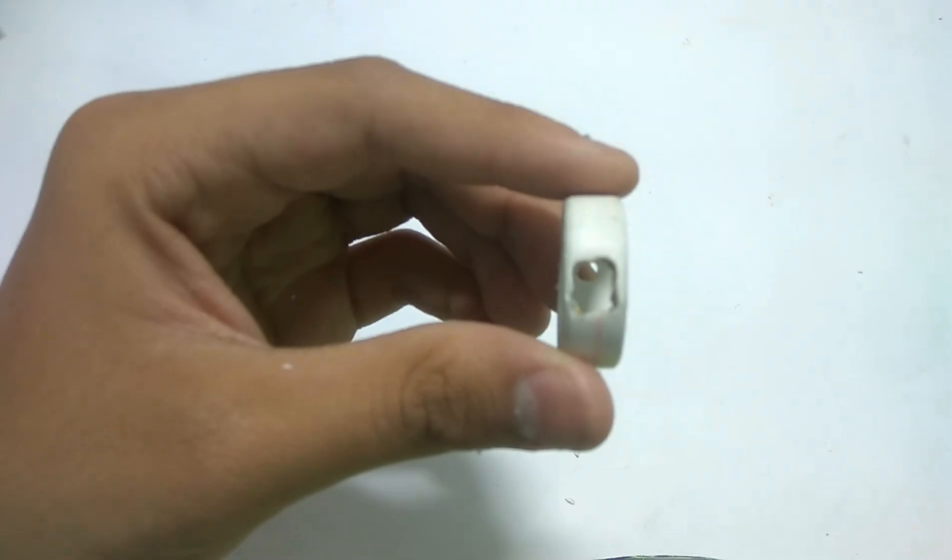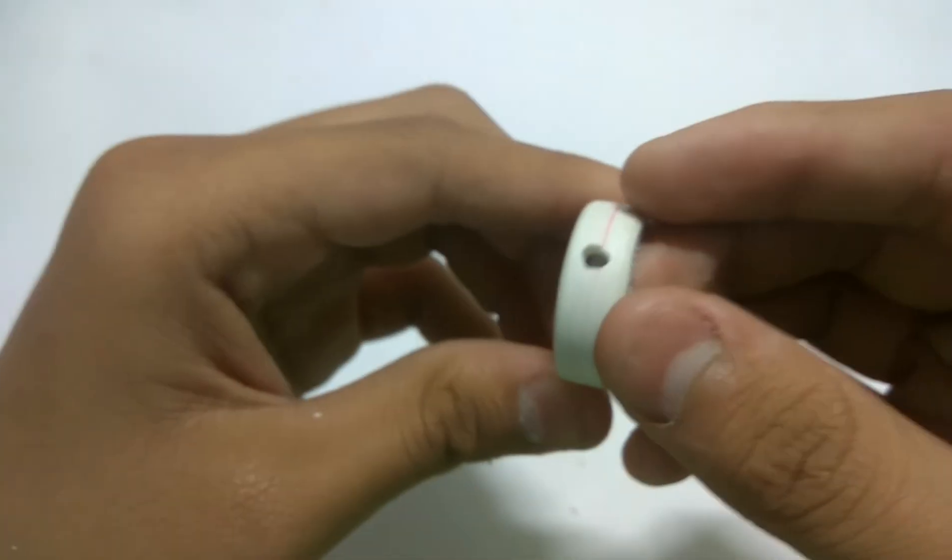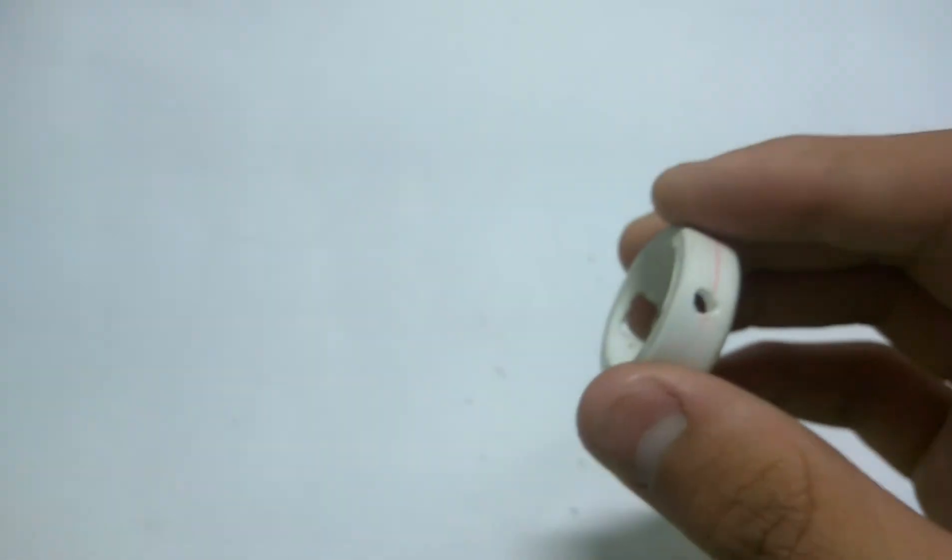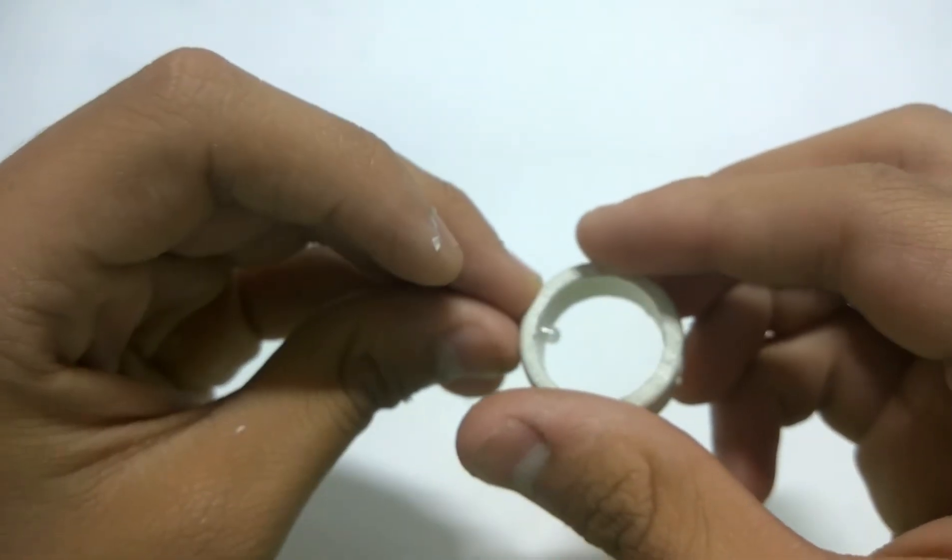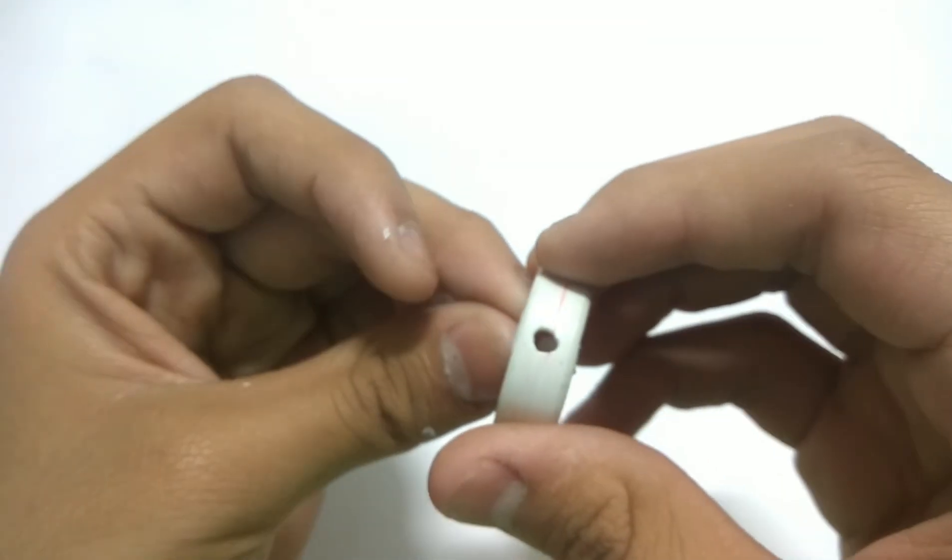After doing that, I'll build a hole exactly opposite it so a blue LED can be pressed on it. As you can see, it will be going like this.